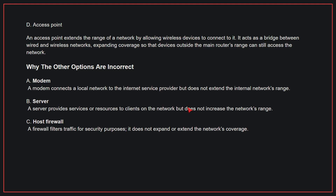Why the other options are incorrect: A, modem — a modem connects a local network to the internet service provider but does not extend the internal network's range. B, server — a server provides services or resources to clients on the network but does not increase the network's range. C, host firewall — a firewall filters traffic for security purposes and does not expand or extend the network's range. Therefore, the correct answer is D.